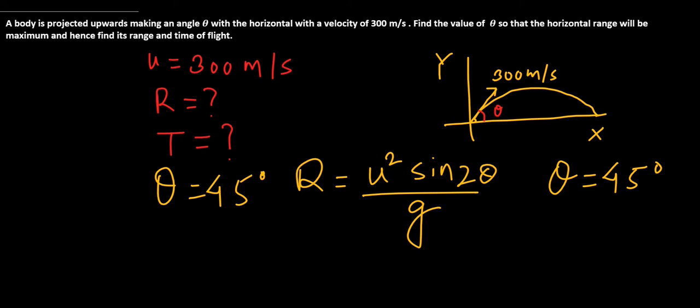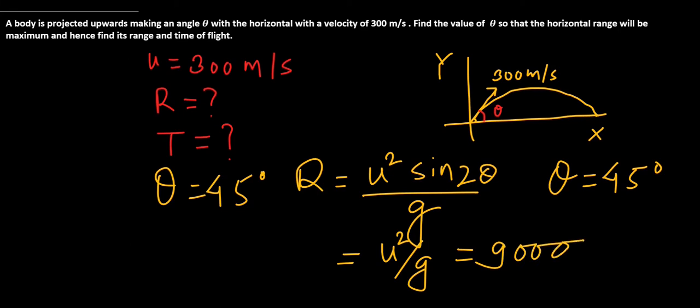For maximum range, sin2θ = 1, so we are left with R = u² / g. With u = 300, u² = 90000, and taking g = 10 for simplicity, this gives a horizontal range of 9000 meter.